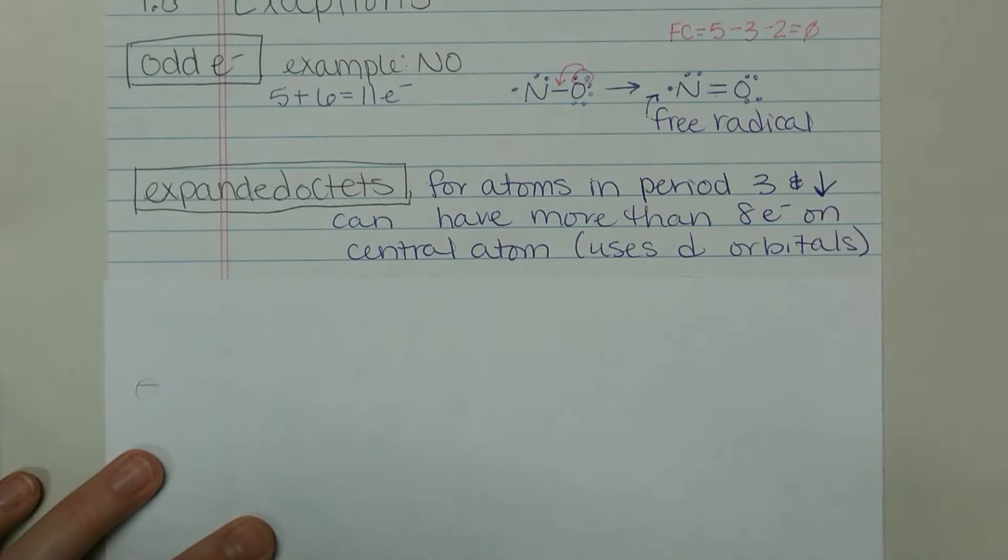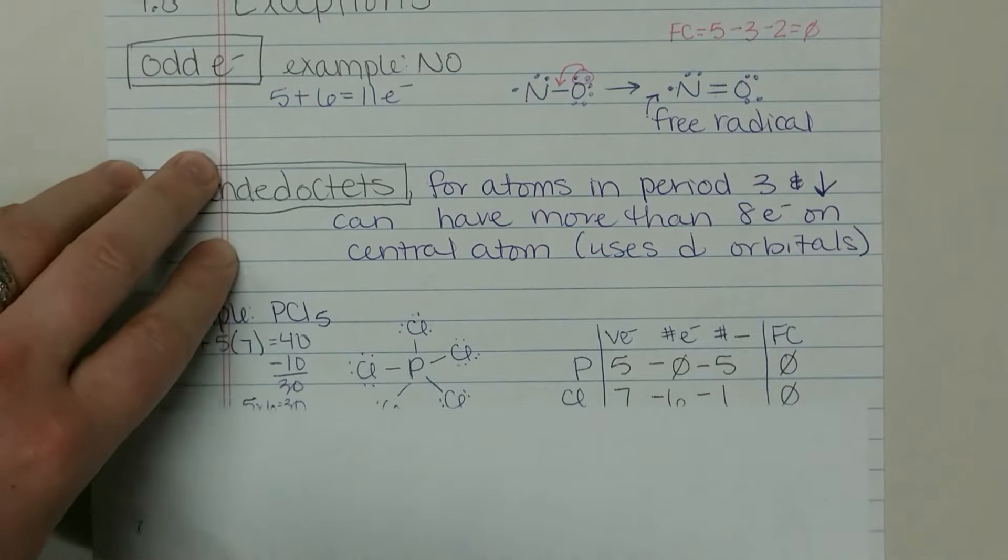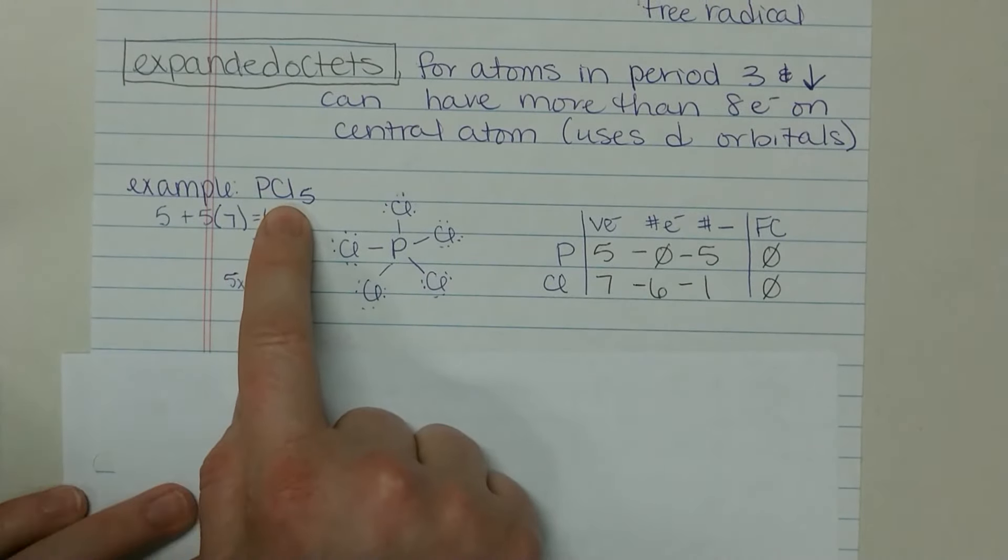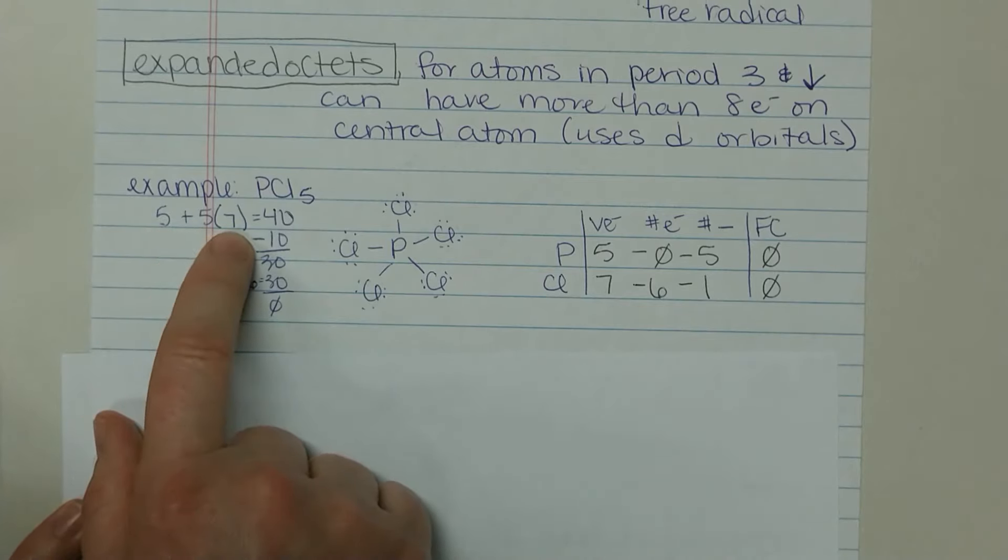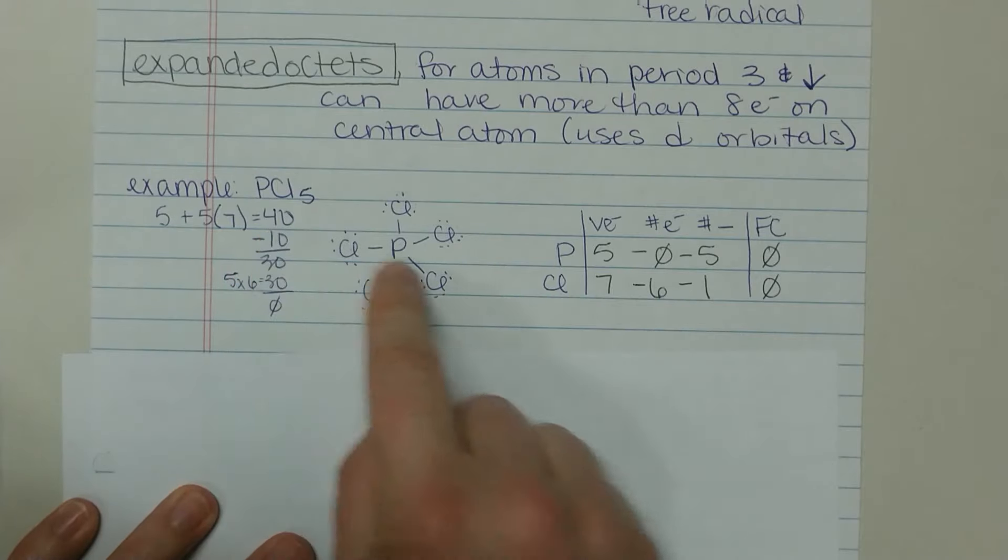Okay, so exceptions. An example here: we have PCl5, so phosphorus pentachloride. Some good naming practice there. Five valence electrons from phosphorus, we have five chlorines at seven electrons each, 40 total electrons. If we stick phosphorus in the center here and draw the five chlorines all around...